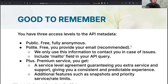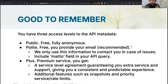It's also good to remember that you have three different access levels to our REST API. The first is always public and free — fully anonymous, you can just visit the link and start making queries. The second level we call the polite level of access, which we strongly encourage you to use. It's still free, but you provide your email for easy identification. We will use this information only to contact you if there is some issue with your operations.